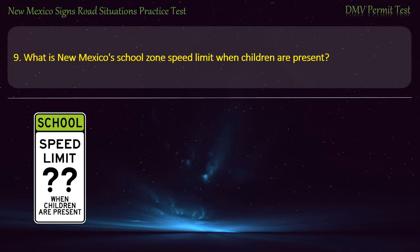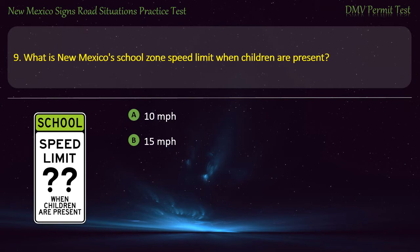Question 9. What is New Mexico's school zone speed limit when children are present? Options: 10 miles per hour; 15 miles per hour; 25 miles per hour; or 20 miles per hour. Answer: 15 miles per hour.